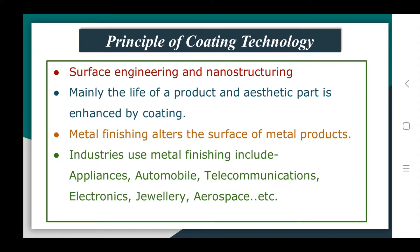By introducing coating on a particular surface, the life of the product can be increased. Coating can also enhance aesthetic appeal. Metal finishing alters the surface of metal products — by introducing a coating it will actually alter the surface of the metal product. Most industries use metal finishing processes to achieve very good surface properties, including the different industries mentioned previously.